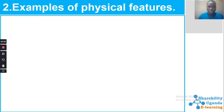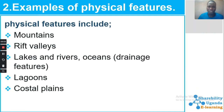We are going to look at examples of physical features. Physical features are natural landforms of the earth's surface. Examples include mountains, water bodies such as lakes and rivers, forests, and plateau. Physical features include mountains, rift valleys, lakes, rivers, and oceans — these are called drainage features. Also lagoons and coastal plains.